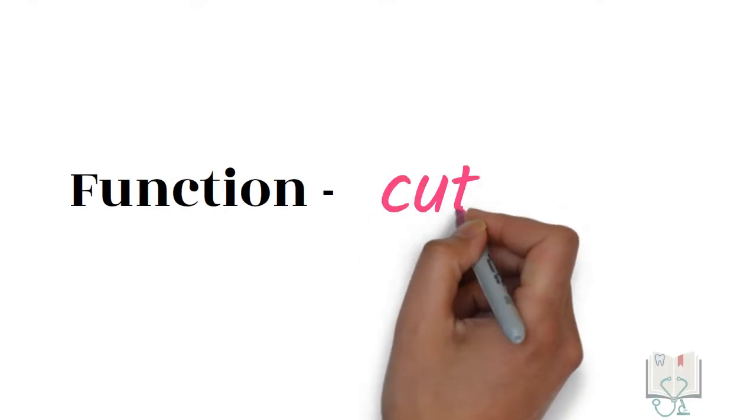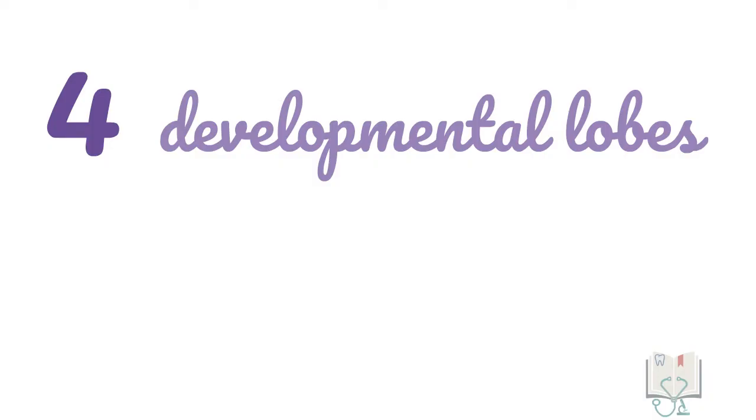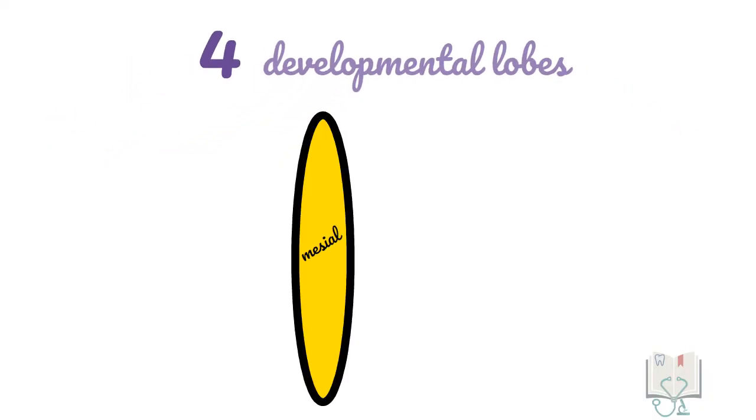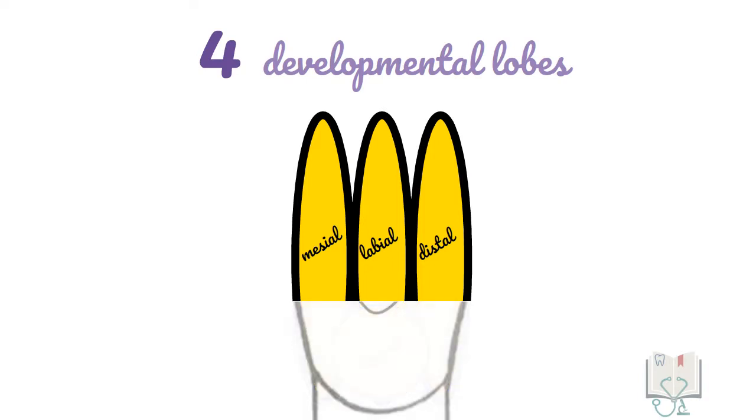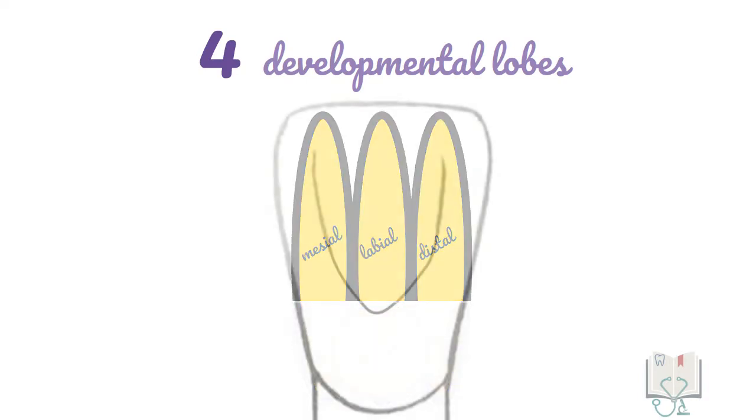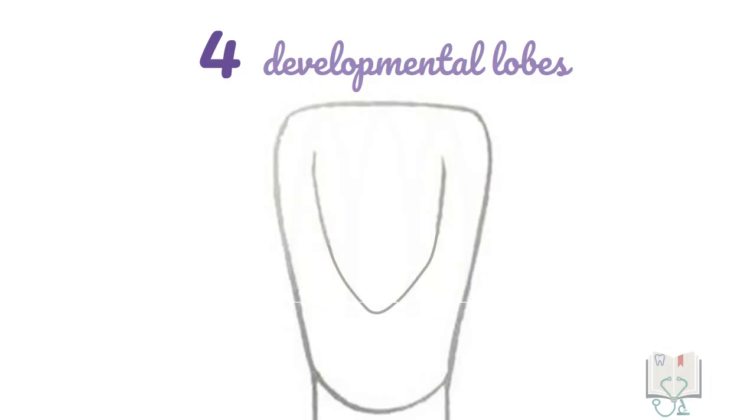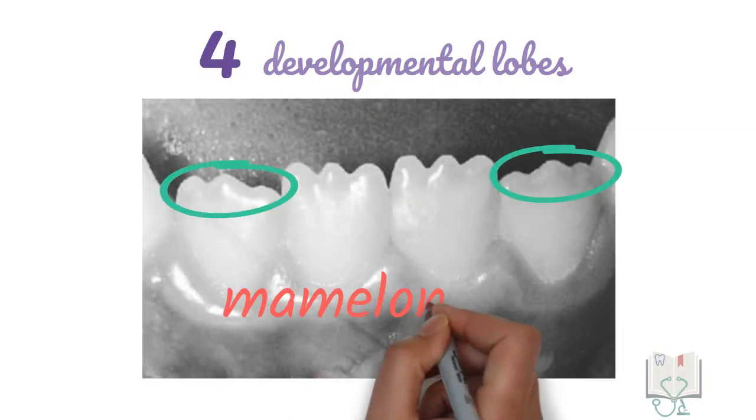The function of mandibular lateral incisor is cutting. The tooth develops from 4 developmental lobes: mesial, labial, distal and lingual. The lingual lobe is less developed and forms the cingulum whereas the mesial, labial and distal lobes form the incisal ridge. Due to them we see three protuberances called mamelons.